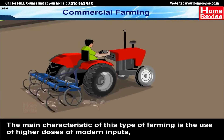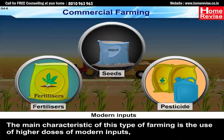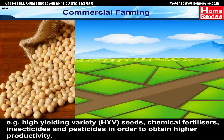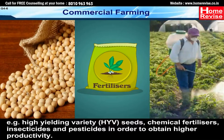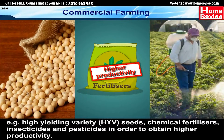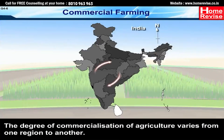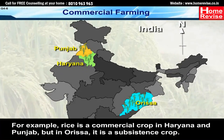Commercial farming is characterized by the use of higher doses of modern inputs such as high yielding variety (HYV) seeds, chemical fertilizers, insecticides and pesticides in order to obtain higher productivity. The degree of commercialization of agriculture varies from one region to another. For example, rice is a commercial crop in Haryana and Punjab, but in Odisha it is a subsistence crop.